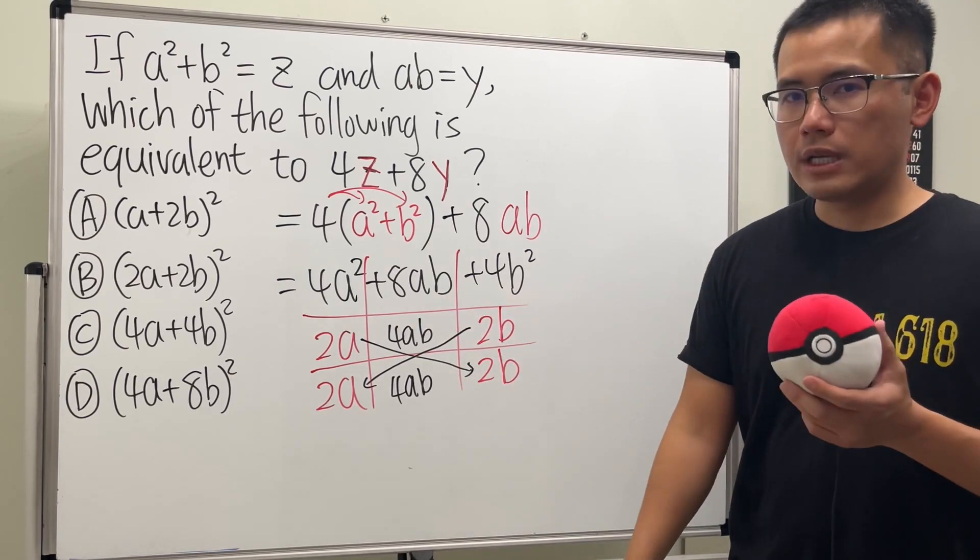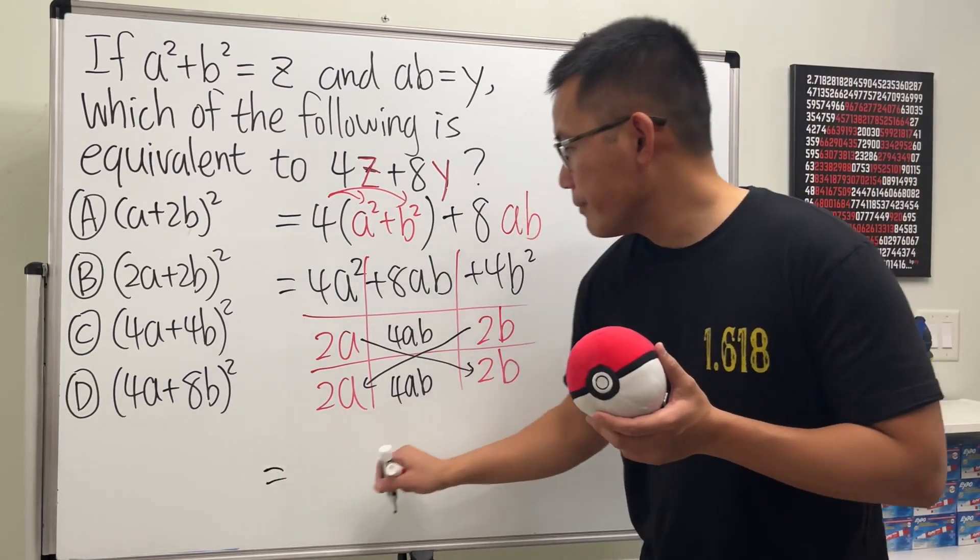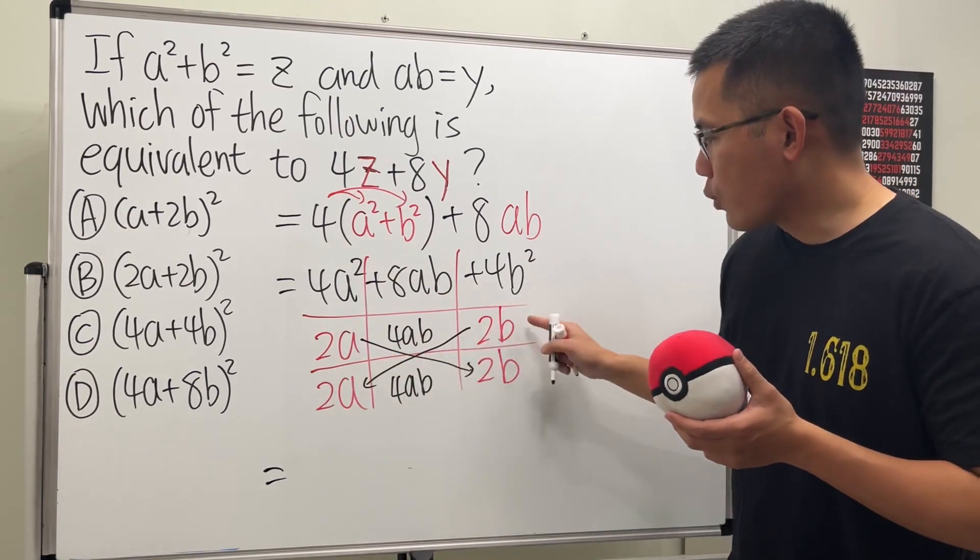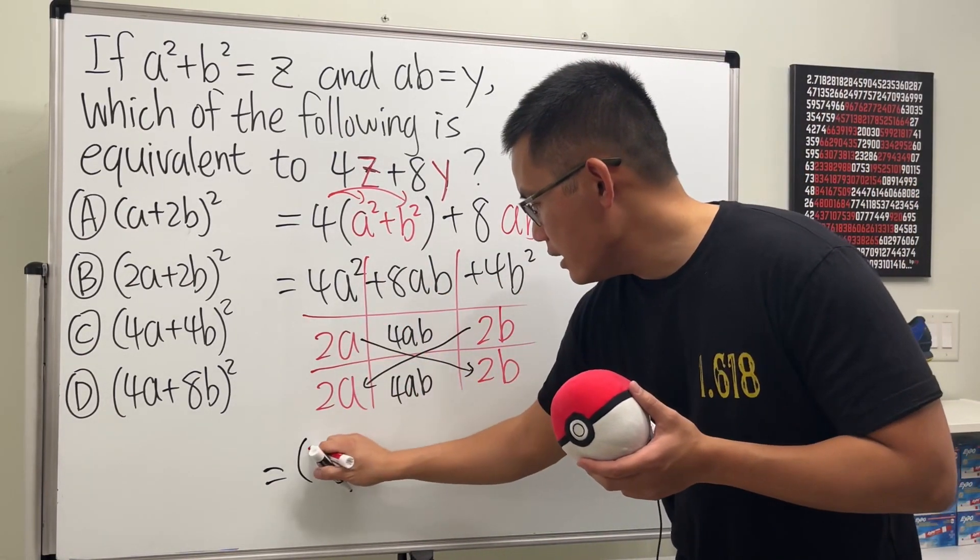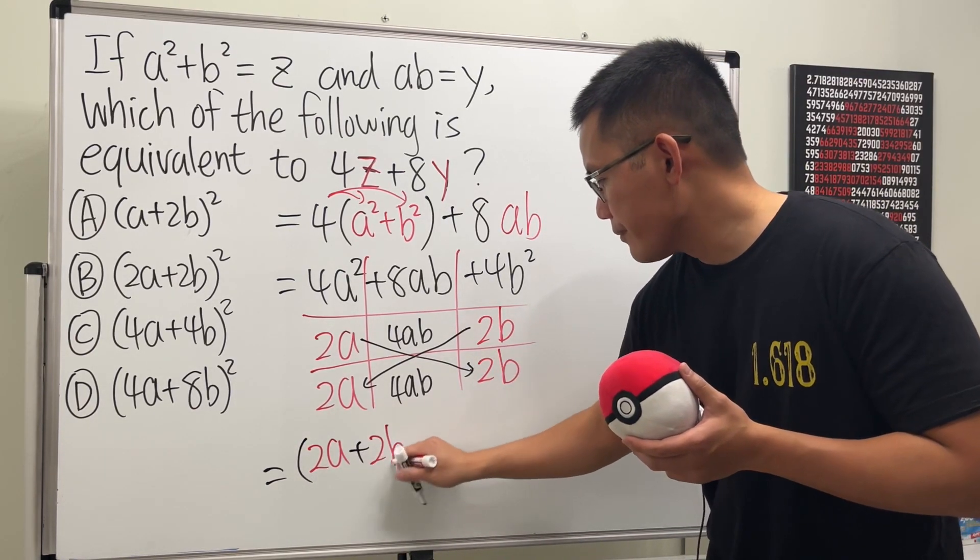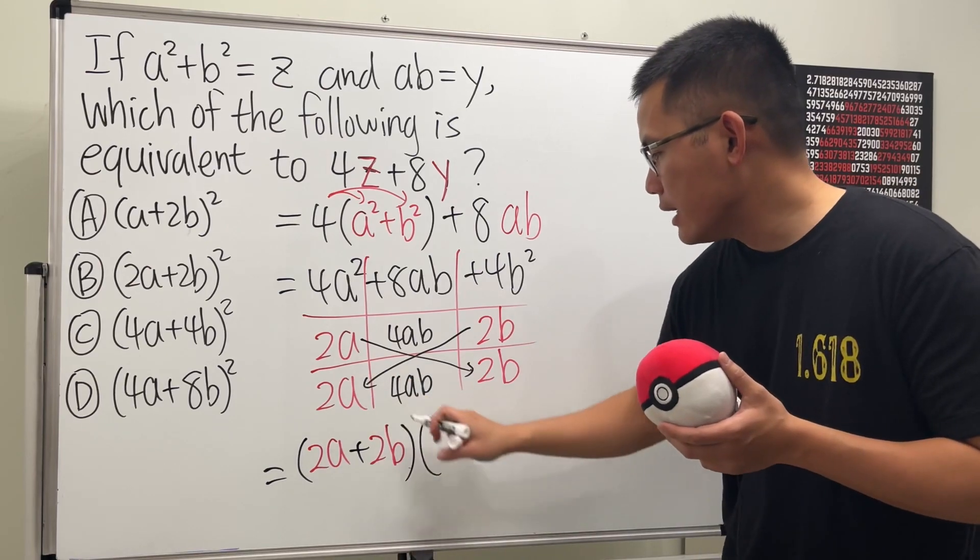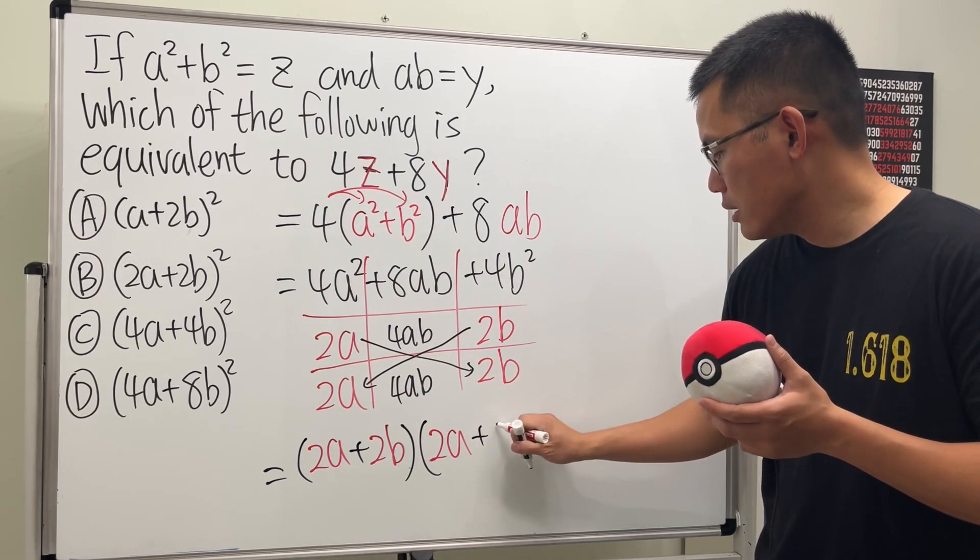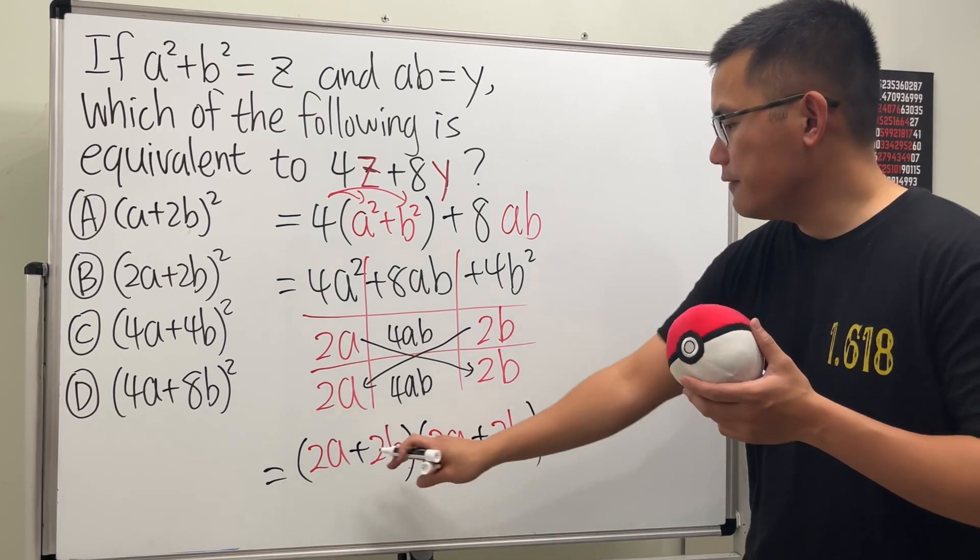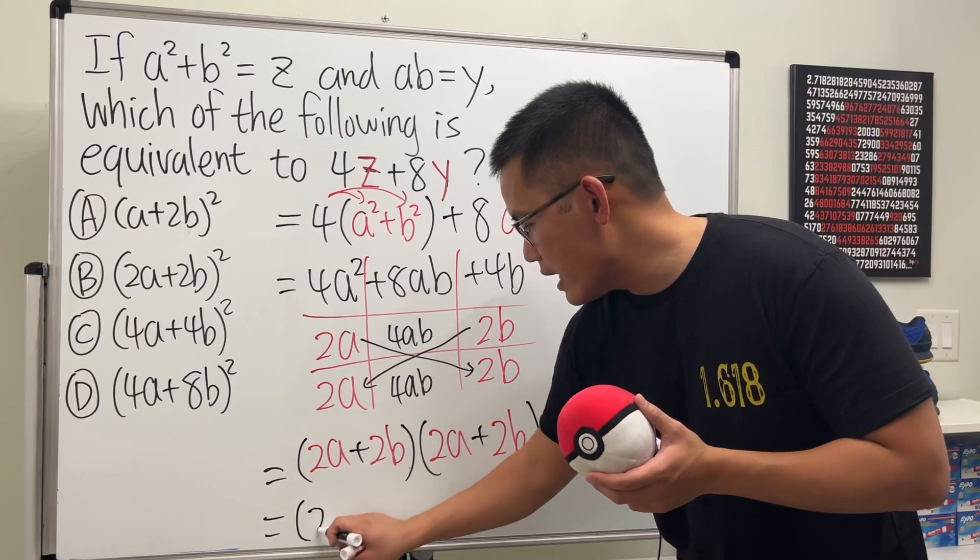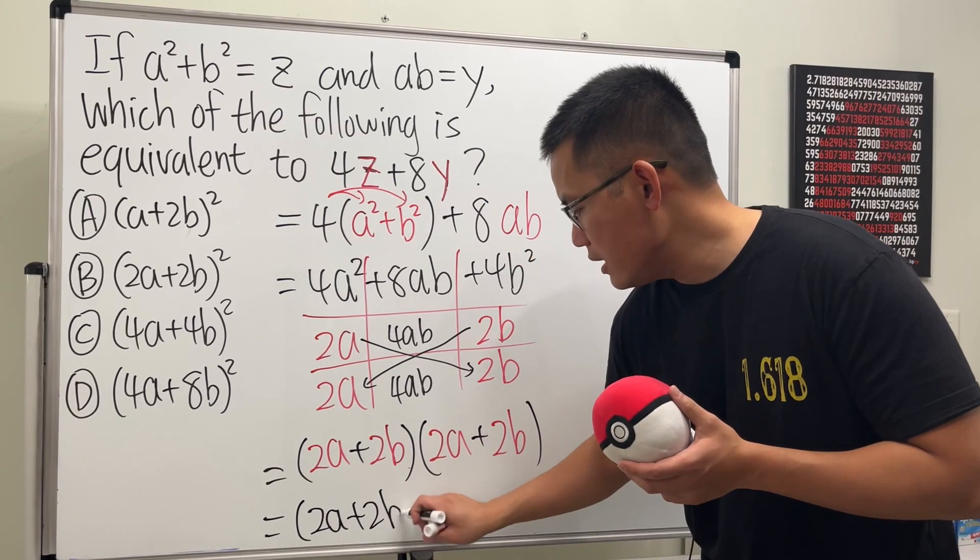So we have found our correct combination. This means this can be factored as, reading across, we have 2a, and then this is positive so we add 2b, and then multiply by 2a plus 2b. And notice that they are exactly the same. So we can write this as (2a plus 2b) squared.